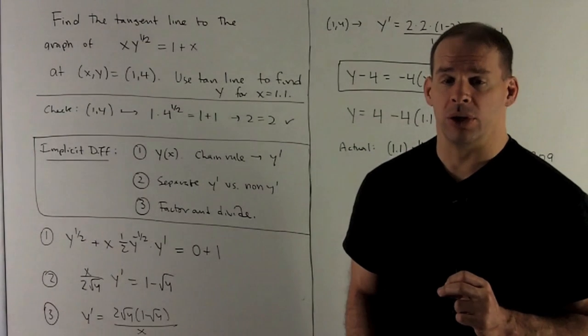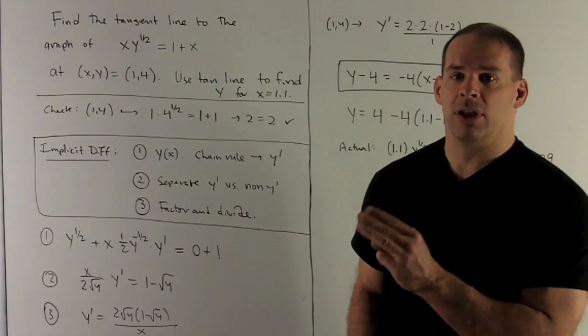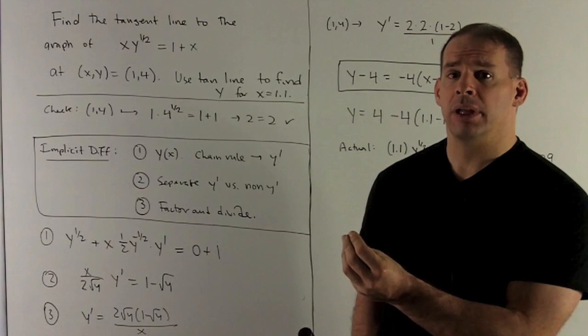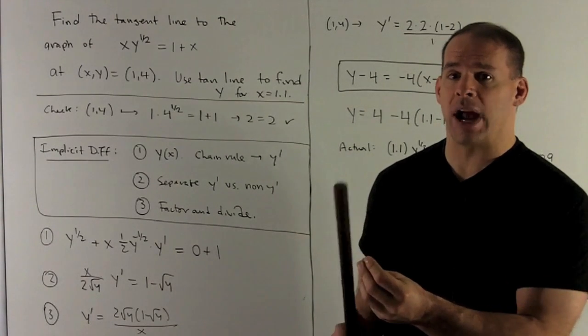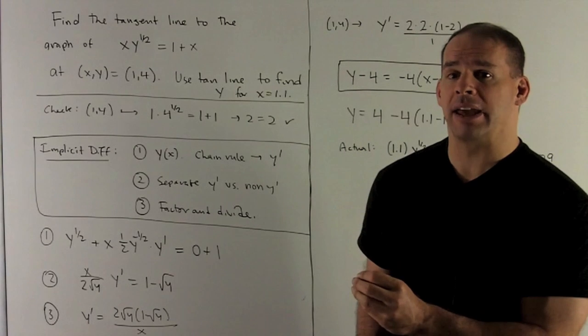To do y^(1/2), we're going to use chain rule. So I cover the y up, we just have something to the 1/2 power. So the half comes down, and we subtract 1 off the exponent, making it -1/2.